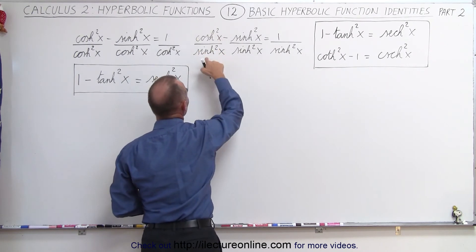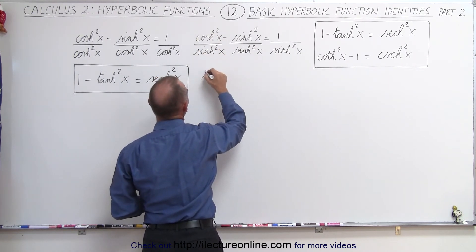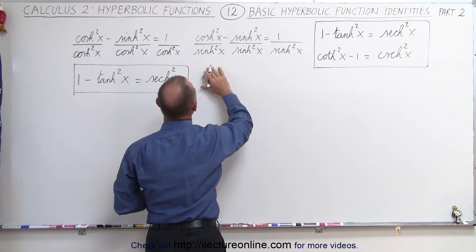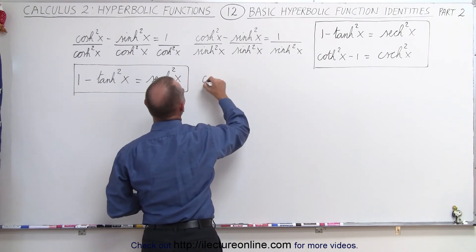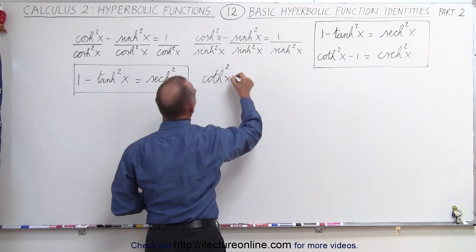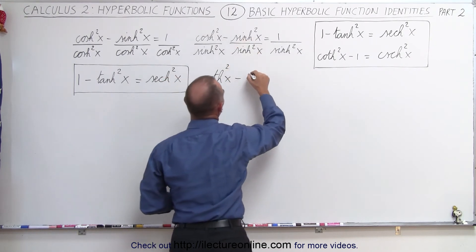the cosine divided by the sine is the tangent, so this becomes a hyperbolic tangent, or cotangent, I should say, not tangent. Cotangent of x squared minus, this becomes 1,